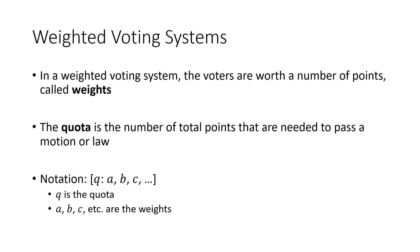Just to remind you, a weighted voting system has several voters that are worth a number of points called the weights of those voters. The quota is the number of total points that are needed to pass a motion or a law. We're assuming that all of the voters are either voting yes or no. If enough of them vote yes, then the law or the motion will pass. If not, it fails.